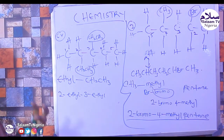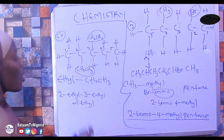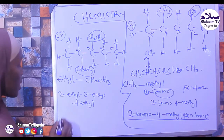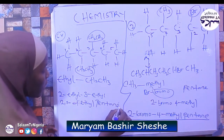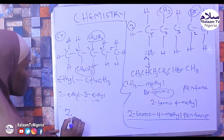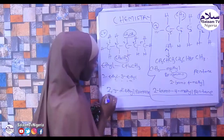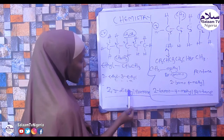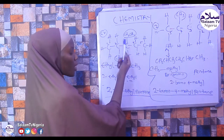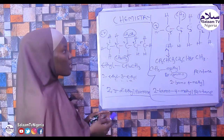Since the two ethyl substituents are identical, we use the prefix 'di'. Therefore we say 2,3-diethylpentane. The name is 2,3-diethylpentane — meaning under position 2 and position 3 there are ethyl groups, and pentane is the parent name. These are simple examples of naming alkene compounds.